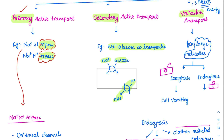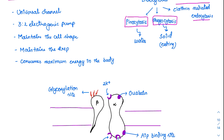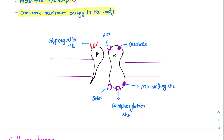The sodium-potassium ATPase is a very important universal channel present in almost all cells. It is a 3:2 electrogenic pump — it maintains cell shape (without it the cell swells and bursts), helps maintain resting membrane potential (RMP), and is the maximum energy consumer in the body, consuming around 50–60% of energy in the BMR. It has two subunits: the beta subunit and the alpha subunit.